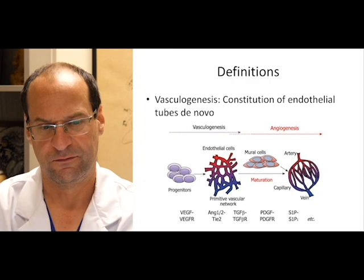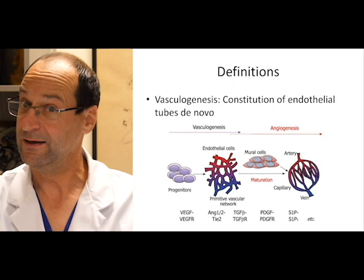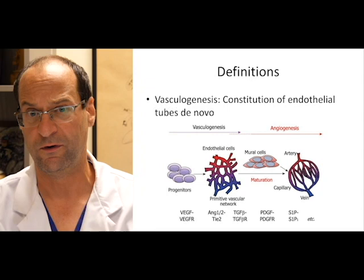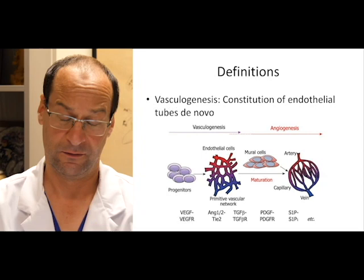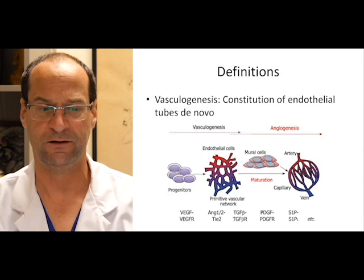What is vasculogenesis? Vasculogenesis means that endothelial tubes form de novo — i.e., in the beginning of vasculogenesis there are no vascular cells at all, there are no vascular tubes at all, and after vasculogenesis the first tubes are formed. This means that vasculogenesis can only happen once in your life, i.e., in utero.